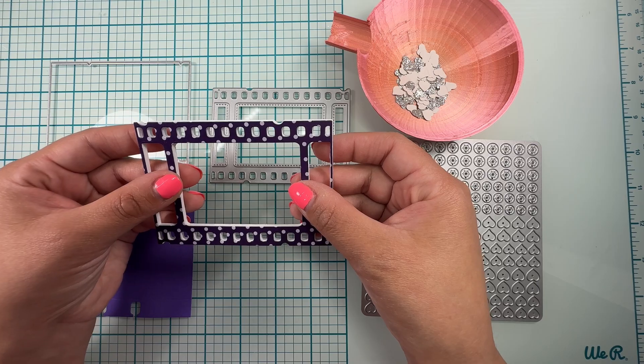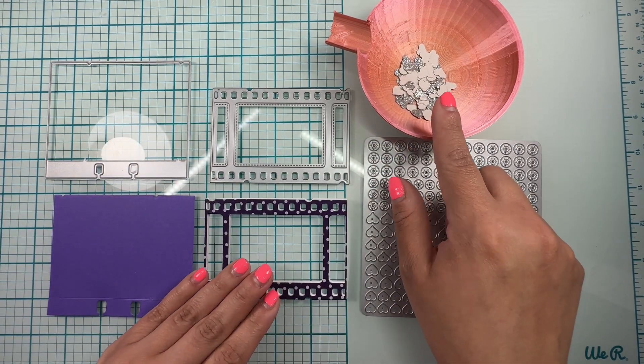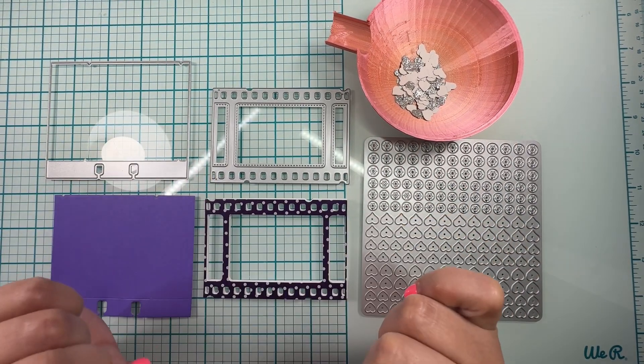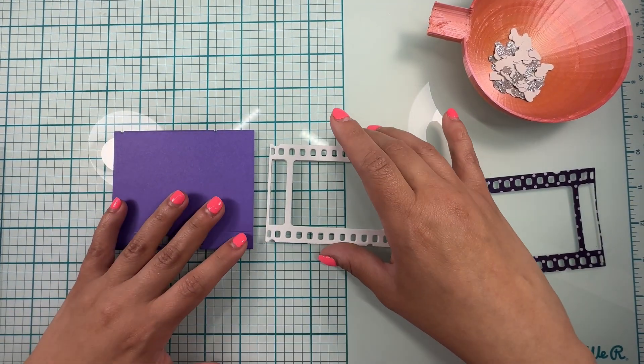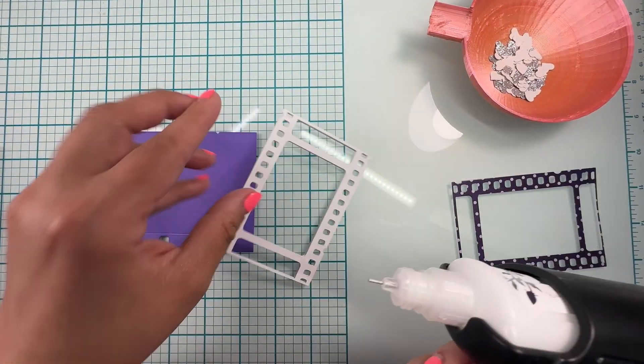Okay, and then we have this and you're gonna need a little piece of acetate for this part as well. The good part about this is that you don't have to use that foam tape.